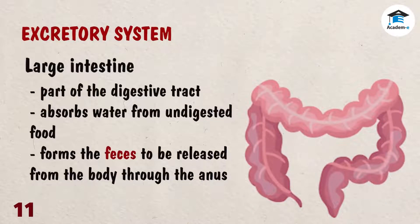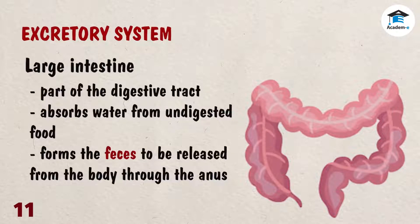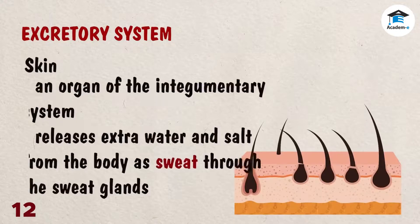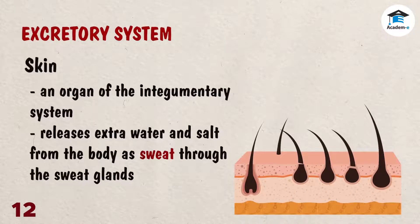The large intestine is a part of the digestive tract which absorbs water from undigested food and forms the feces. Feces accumulate in the rectum and are released from the body through the anus. The skin is an organ of the integumentary system that releases extra water and salt from the body as sweat through the sweat glands.